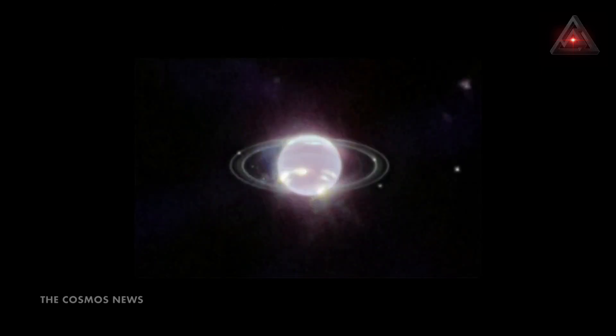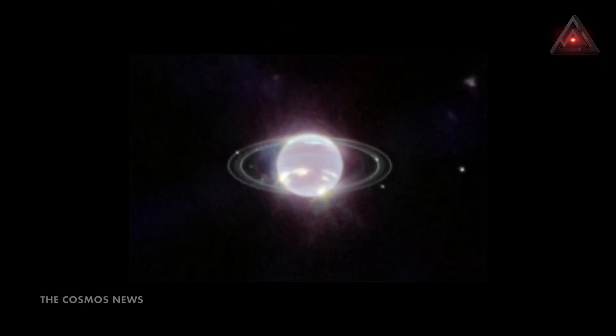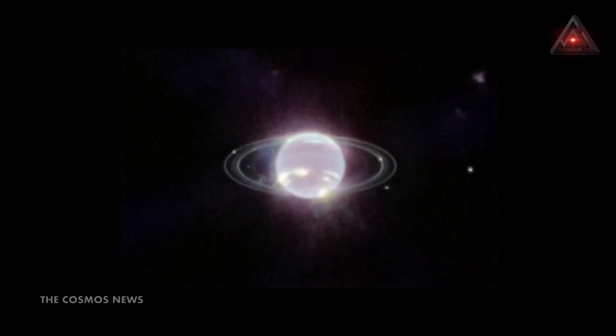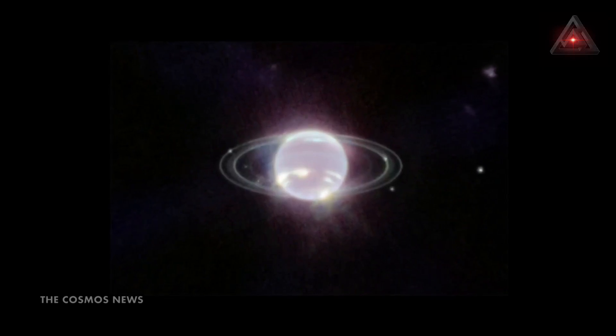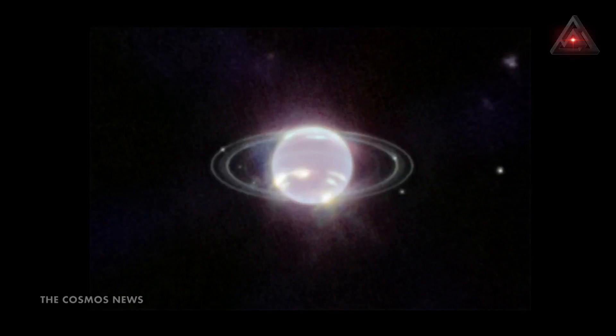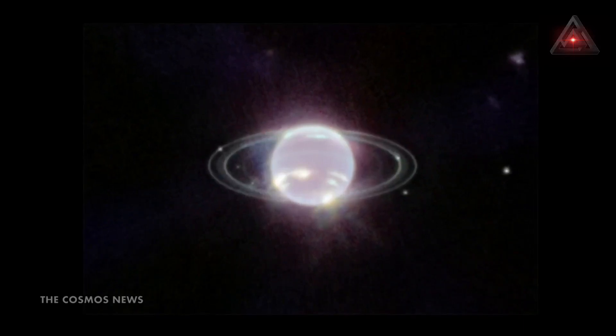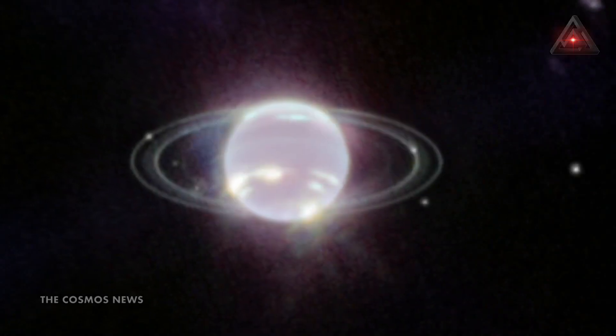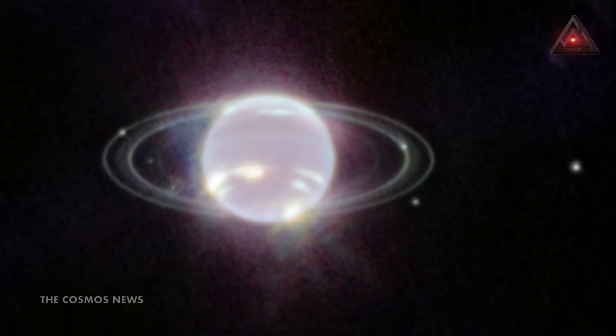NASA's James Webb Space Telescope shows off its capabilities closer to home with its first image of Neptune. Not only has Webb captured the clearest view of this distant planet's rings in more than 30 years, but its cameras reveal the ice giant in a whole new light. Most striking in Webb's new image is the crisp view of the planet's rings.